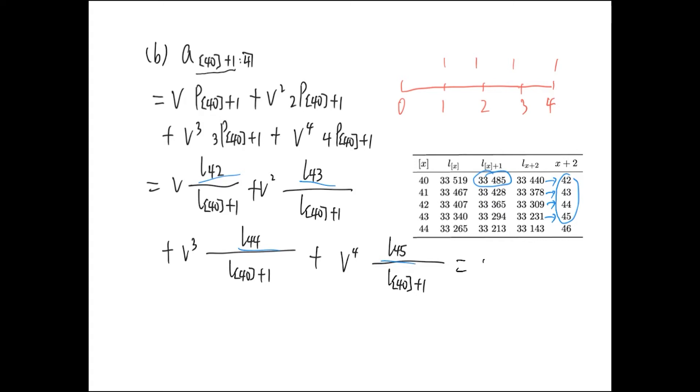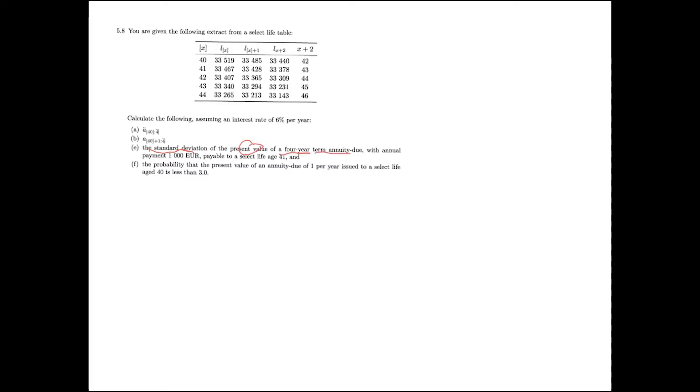Our final answer for part B is obtained. In part E, we are going to calculate the standard deviation of a random variable. The random variable is the present value of a four-year term annuity due, with a payment of 1000 per year, payable to a select life at age 41. Since we need to calculate the standard deviation, let's first figure out the distribution of this random variable. The present value of this four-year term annuity due depends on the integer part of the future lifetime of this selected life.